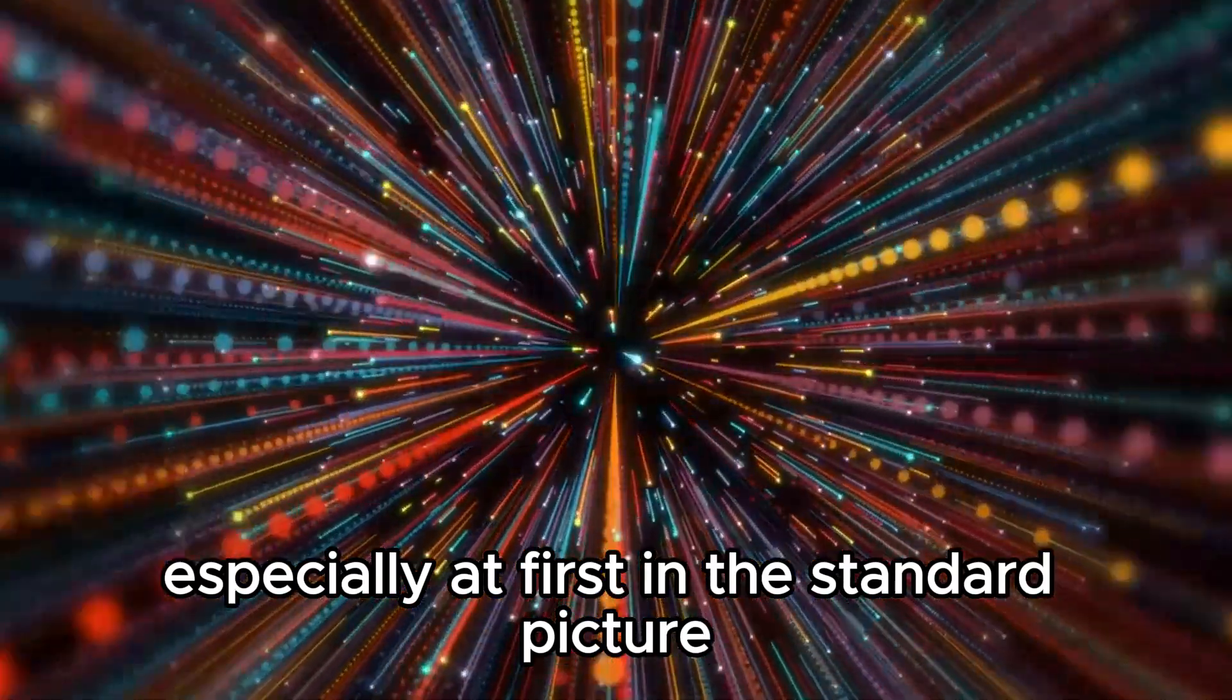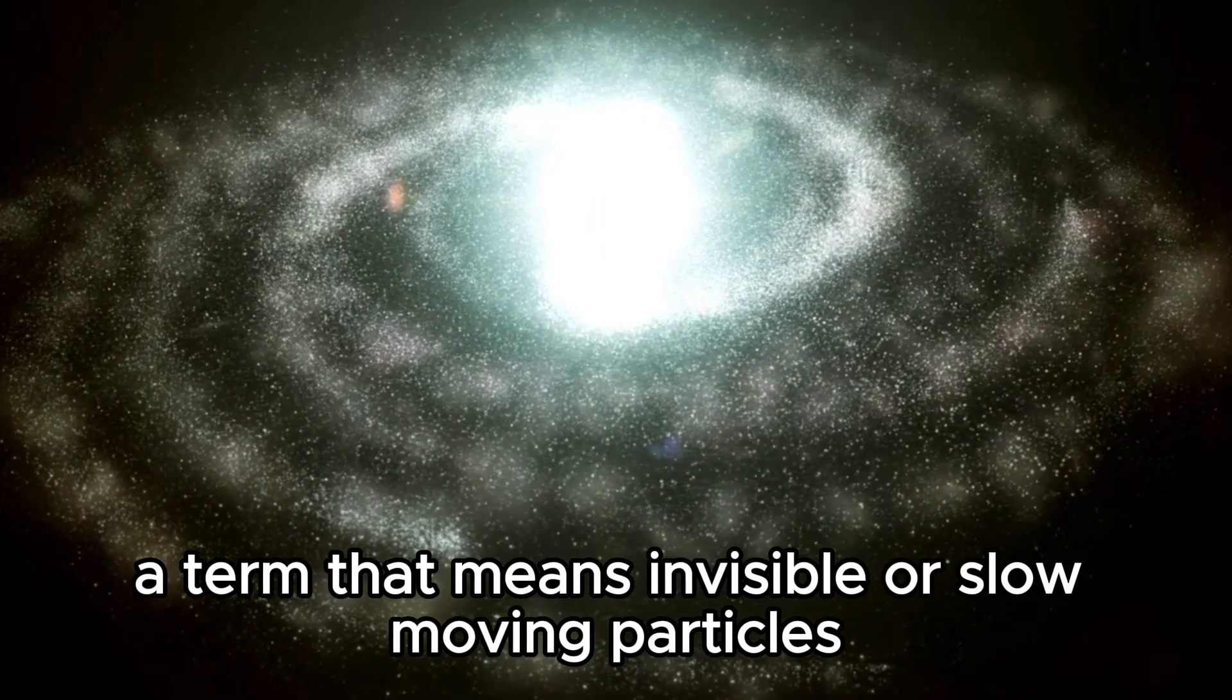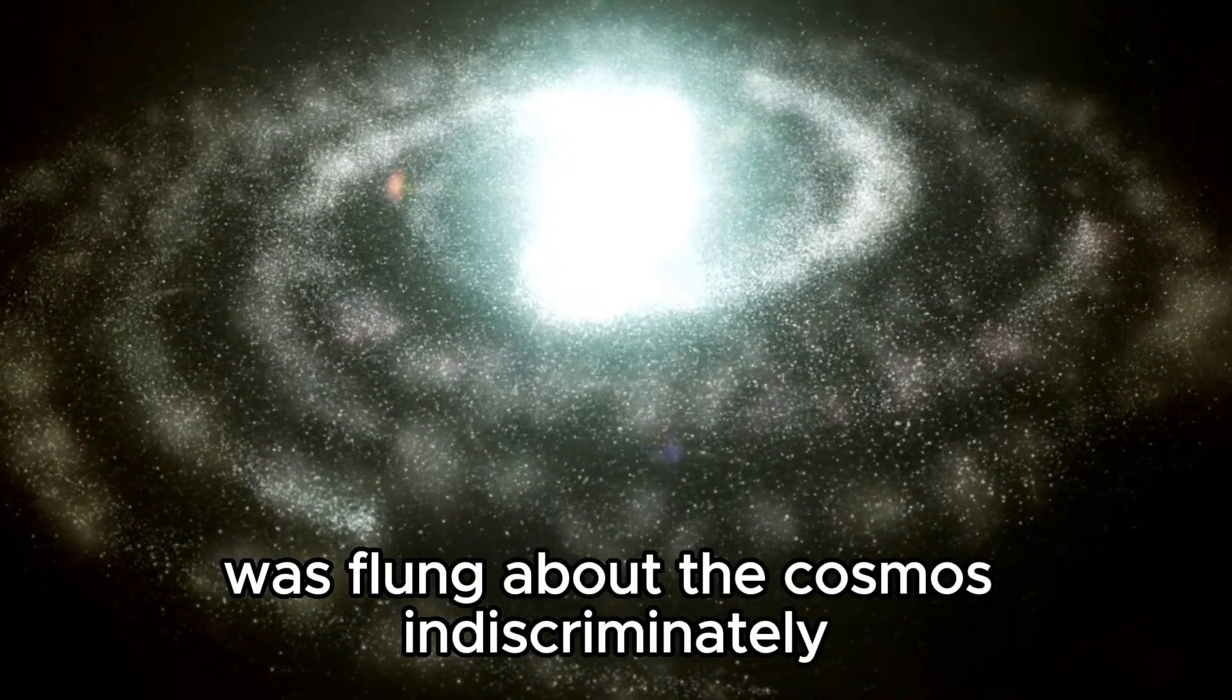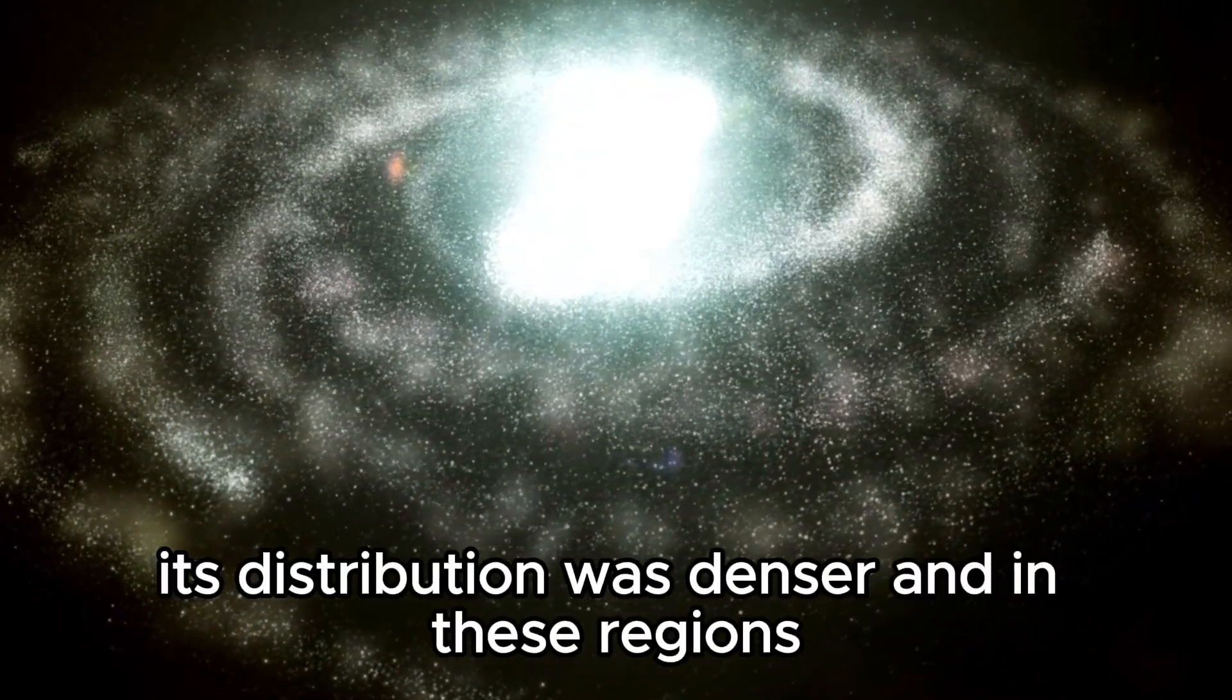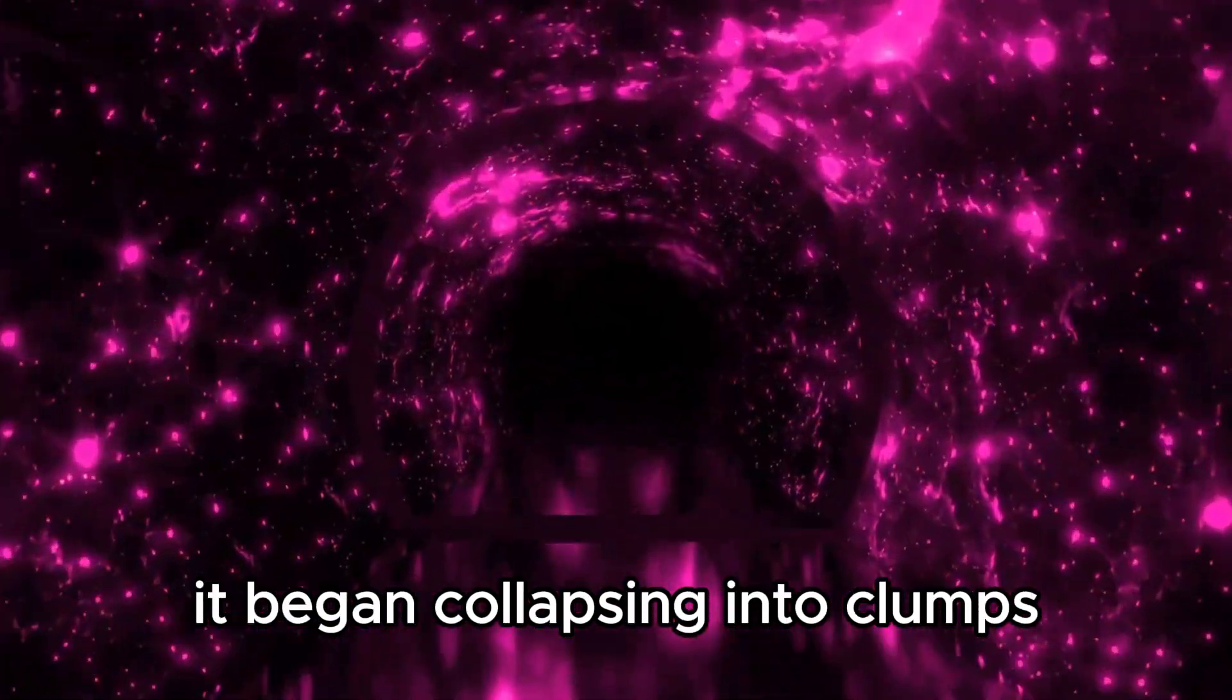In the standard picture, cold dark matter, a term that means invisible or slow-moving particles, was flung about the cosmos indiscriminately. In some areas, its distribution was denser, and in these regions, it began collapsing into clumps.